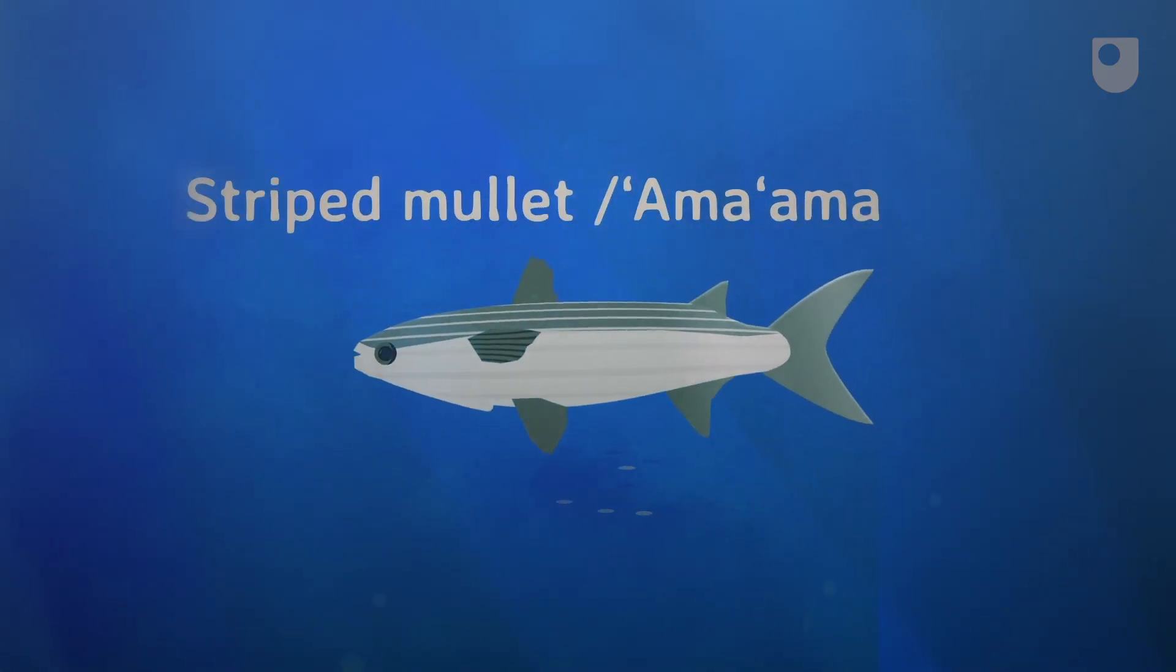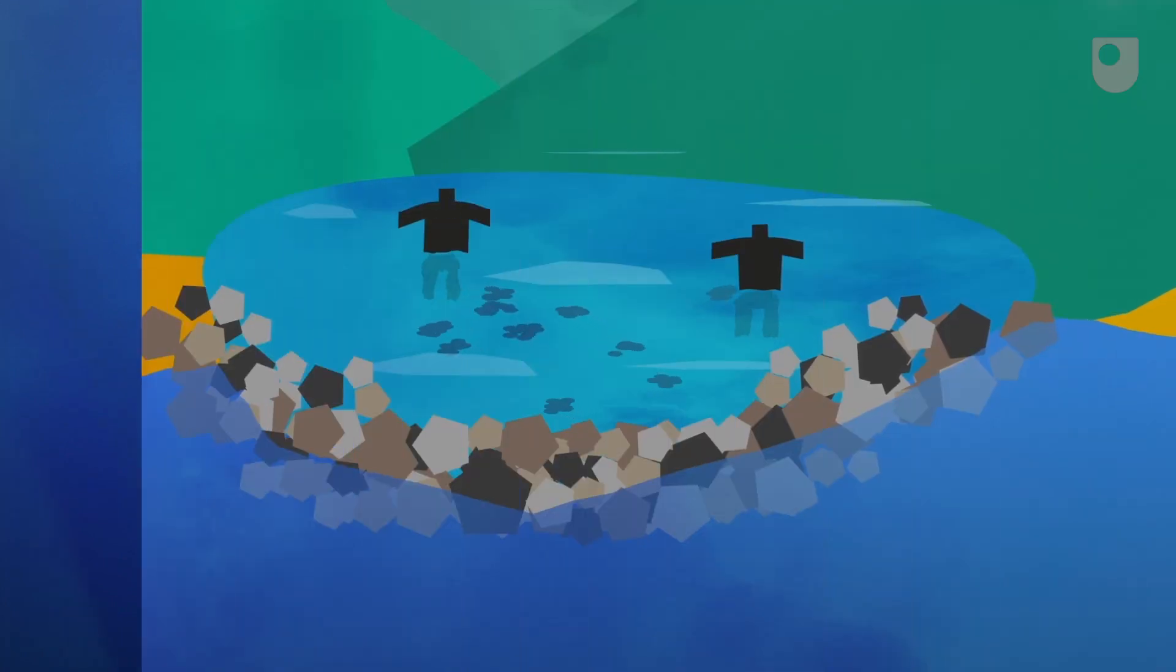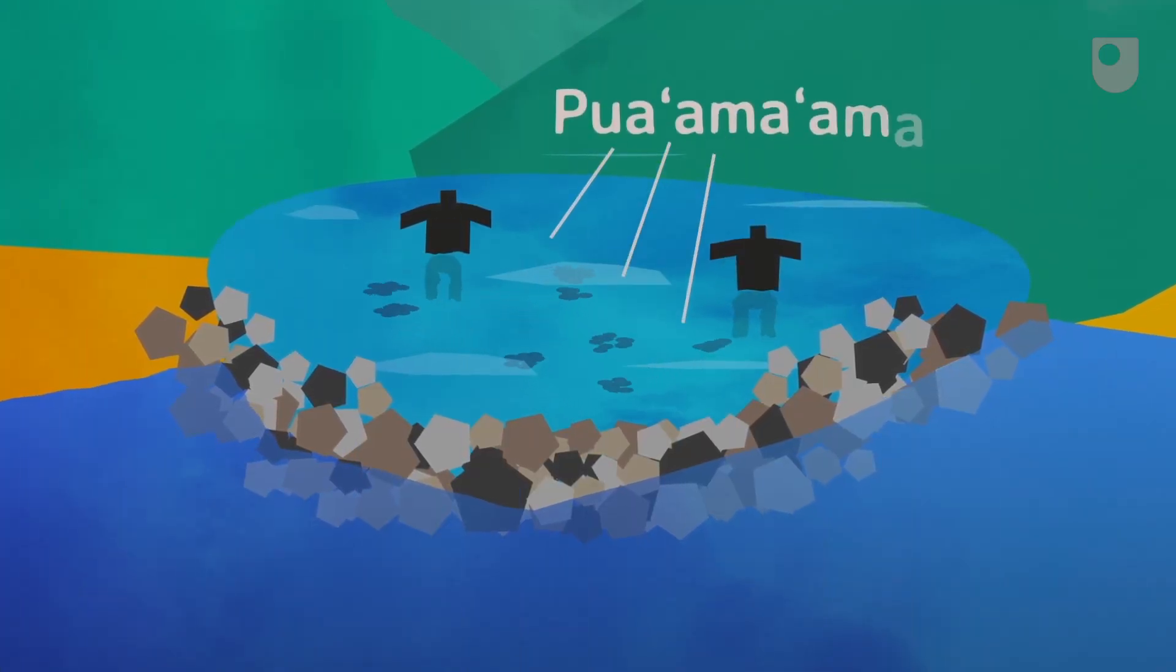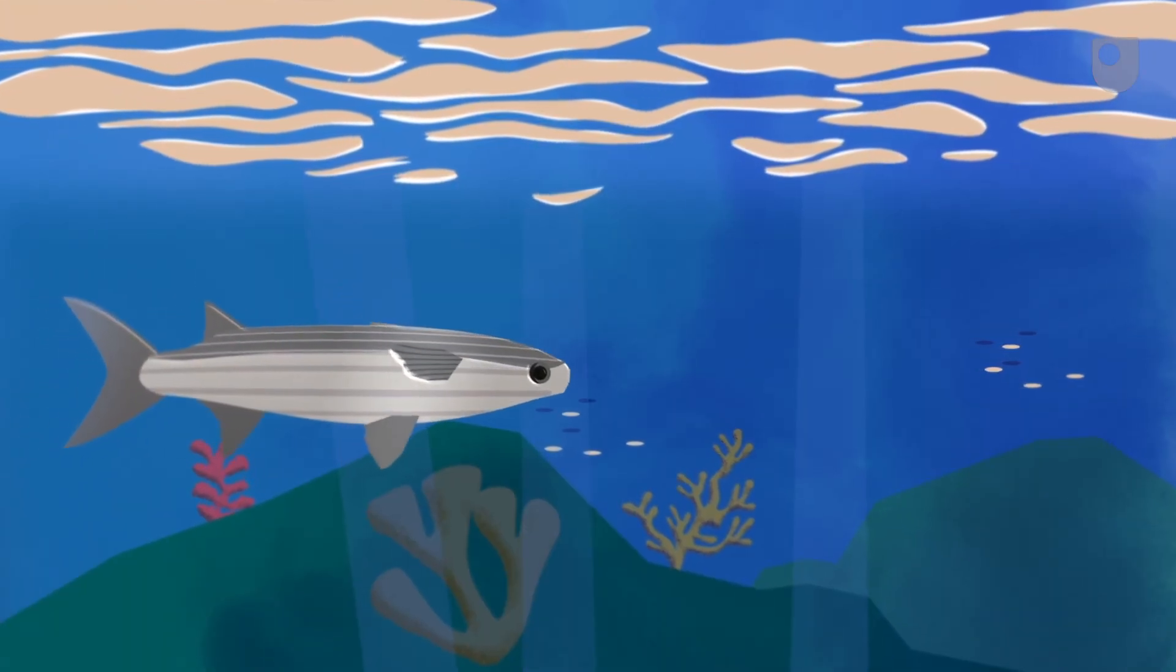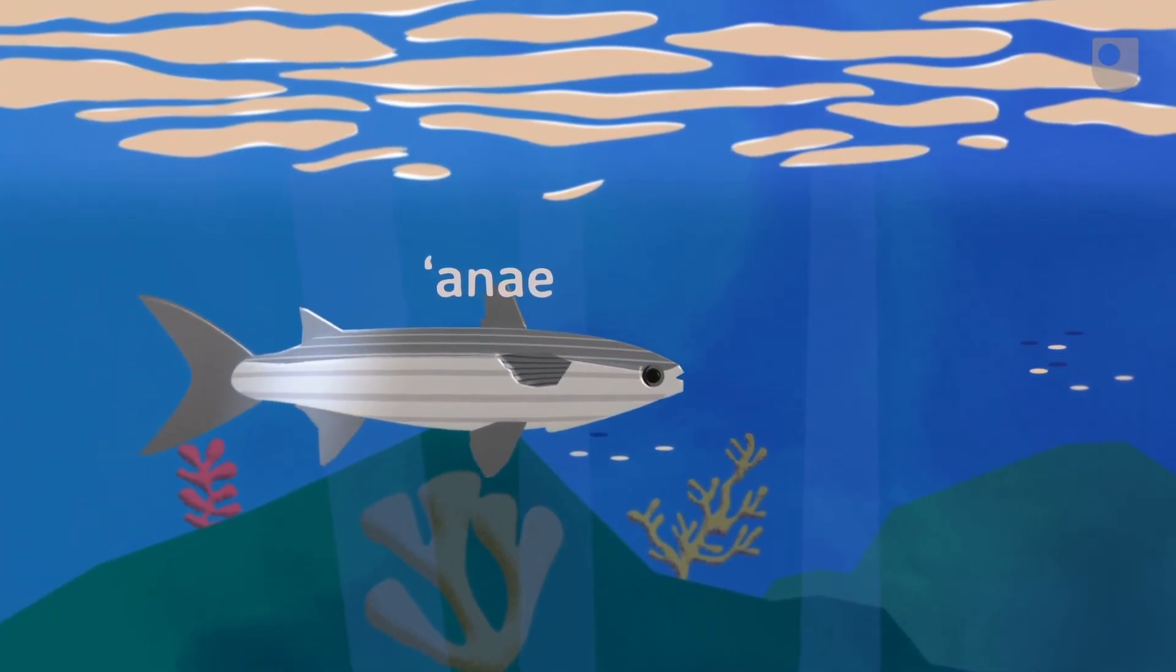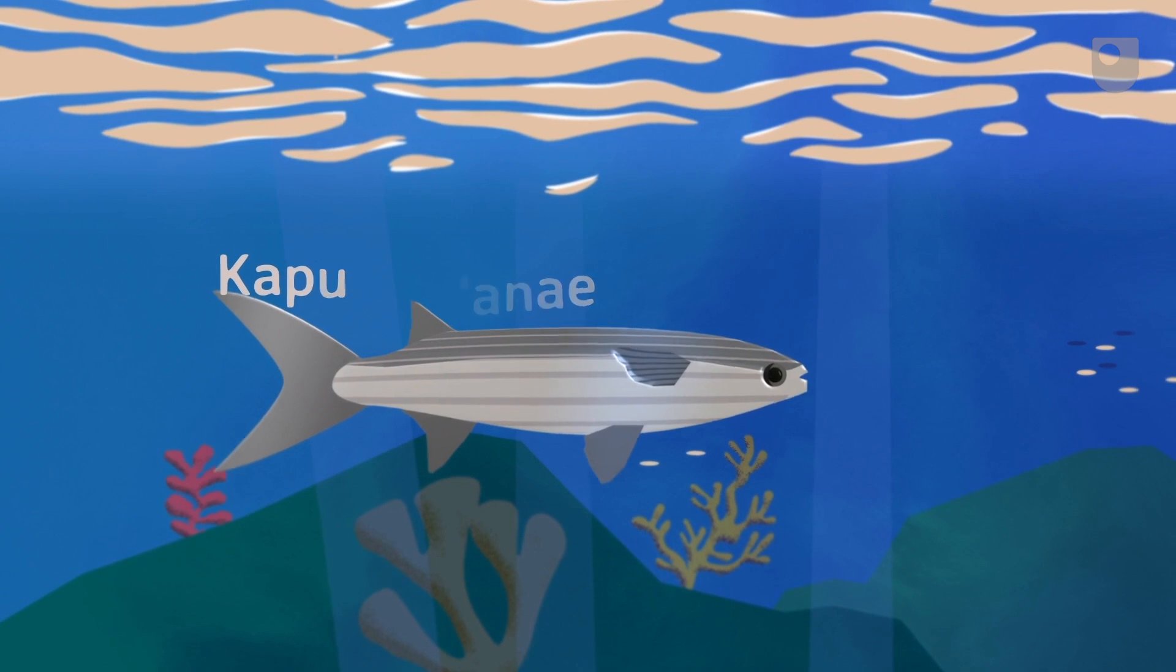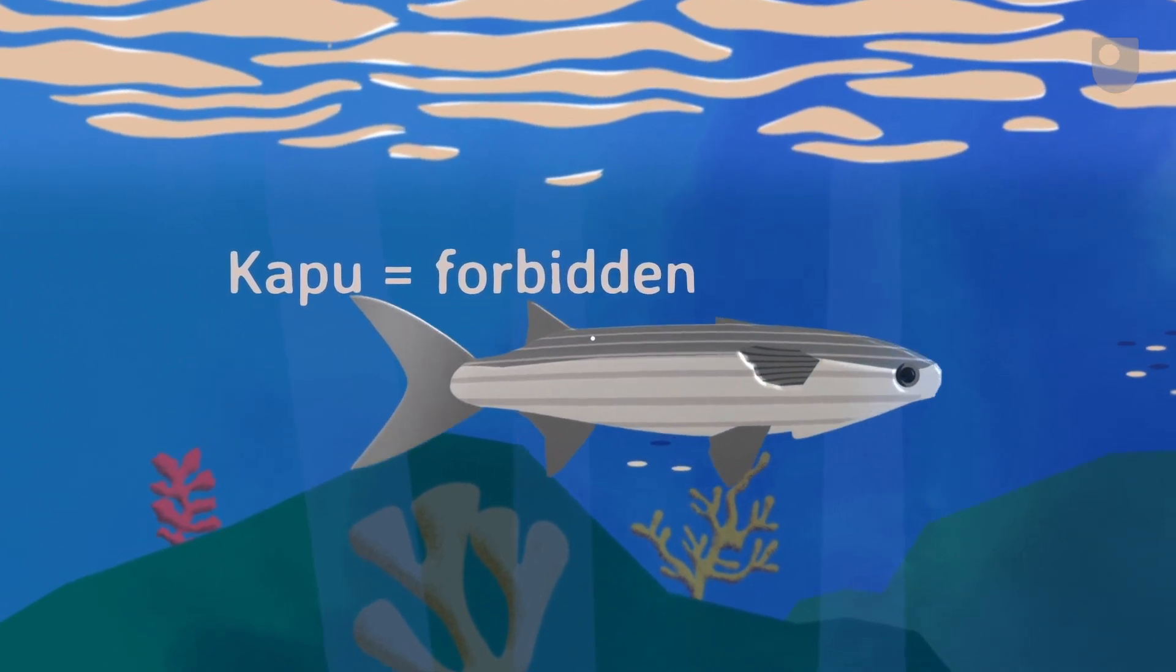Traditional fishermen used an extensive vocabulary to describe its life stages. The fish were called Puaamaama as they entered cultivated fish ponds. They returned to the ocean as anai to spawn and reproduce, when it was forbidden, or kapu, to harvest them. The language supported a sustainable fishing cycle, ensuring food was available for the long term.